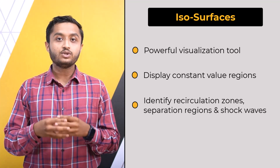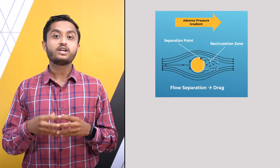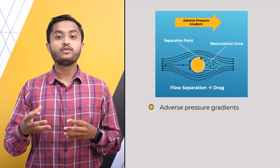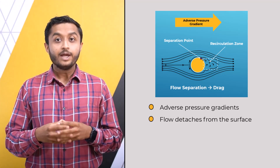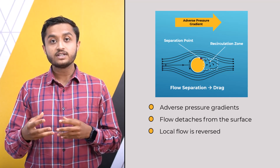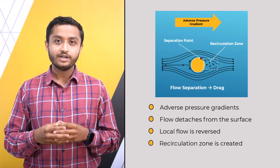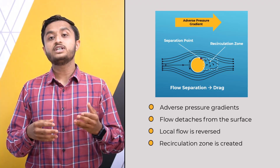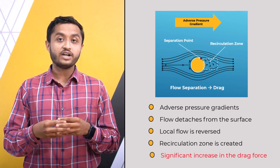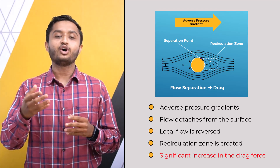Here, we will use isosurfaces to look at regions of flow separation. As fluid flows over a curved surface, it sometimes encounters adverse pressure gradients that cause the flow to detach from the surface. Beyond the point of flow separation, the local flow near the surface is reversed, creating a recirculation region in the flow field where the fluid flow is in the opposite direction to the bulk flow. Flow separation should be avoided as it leads to a significant increase in drag force.